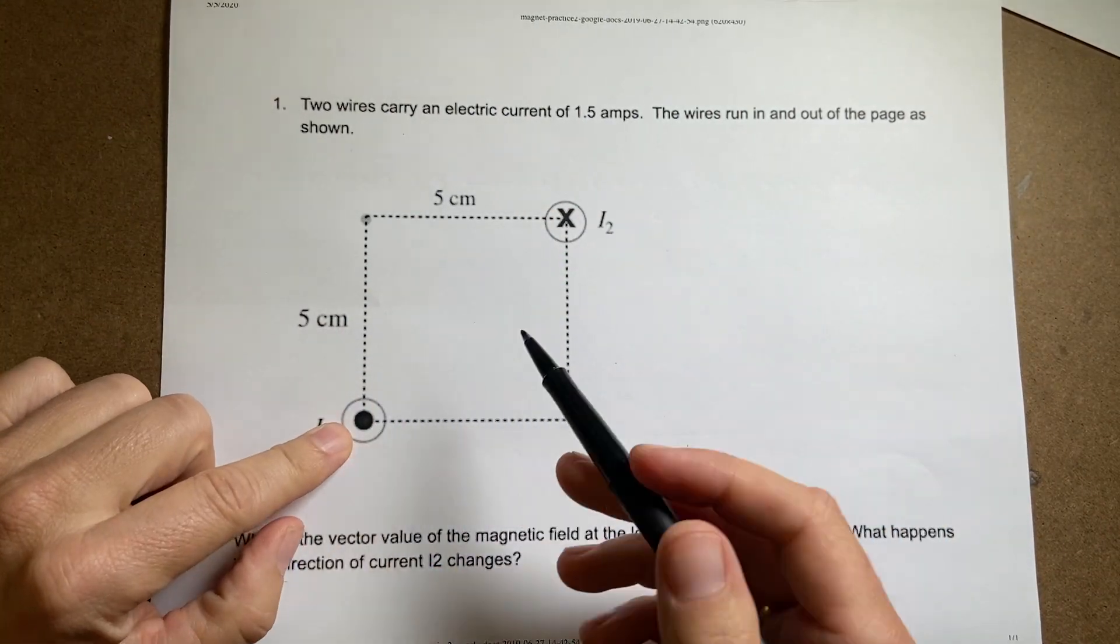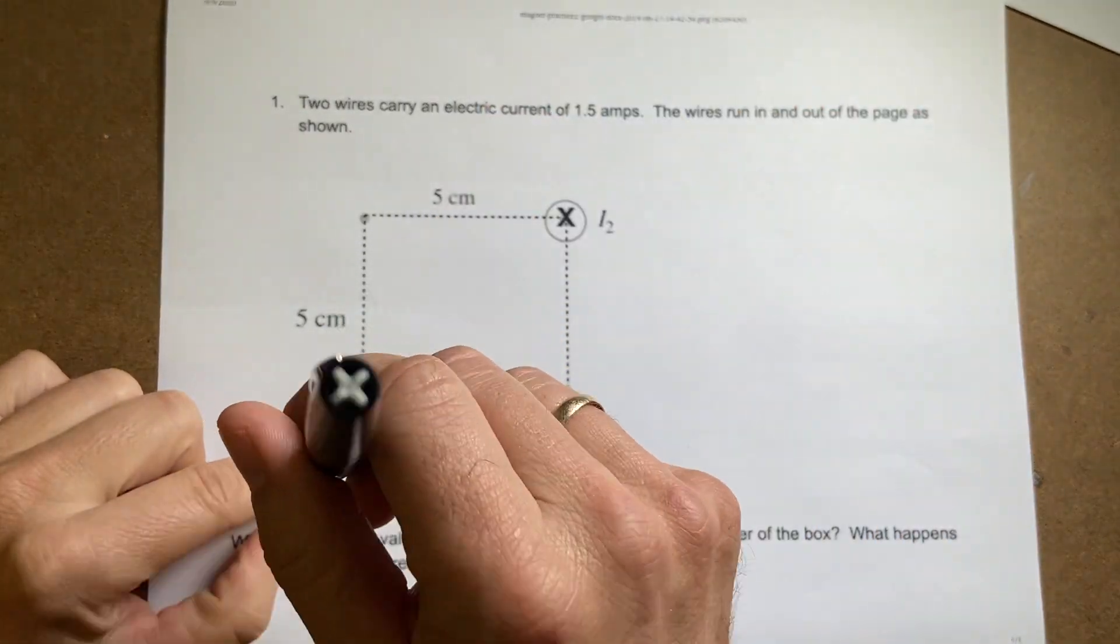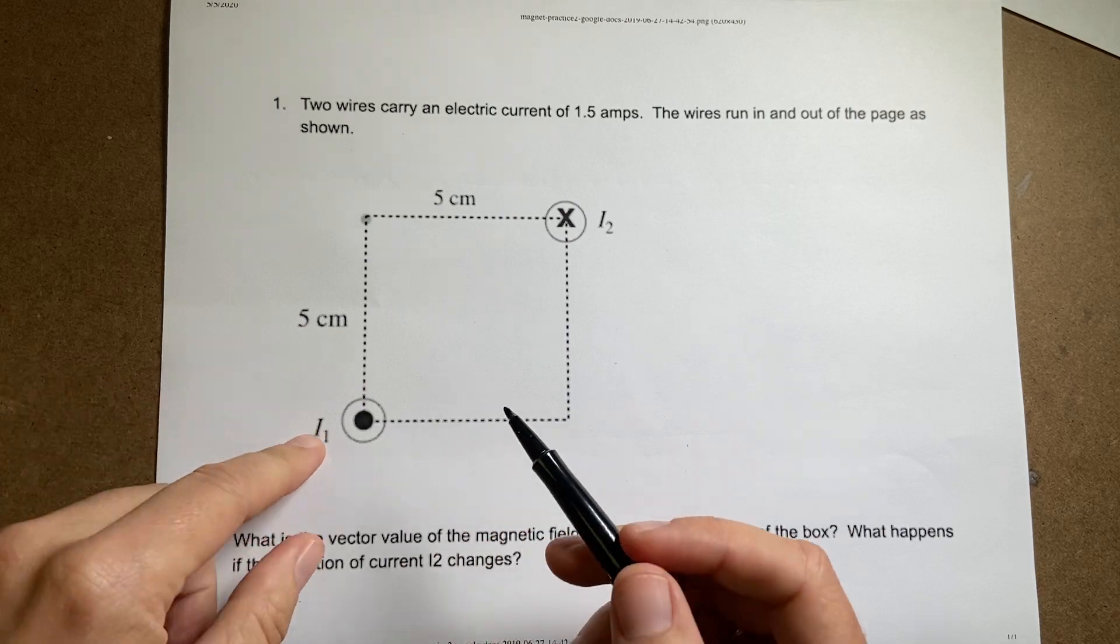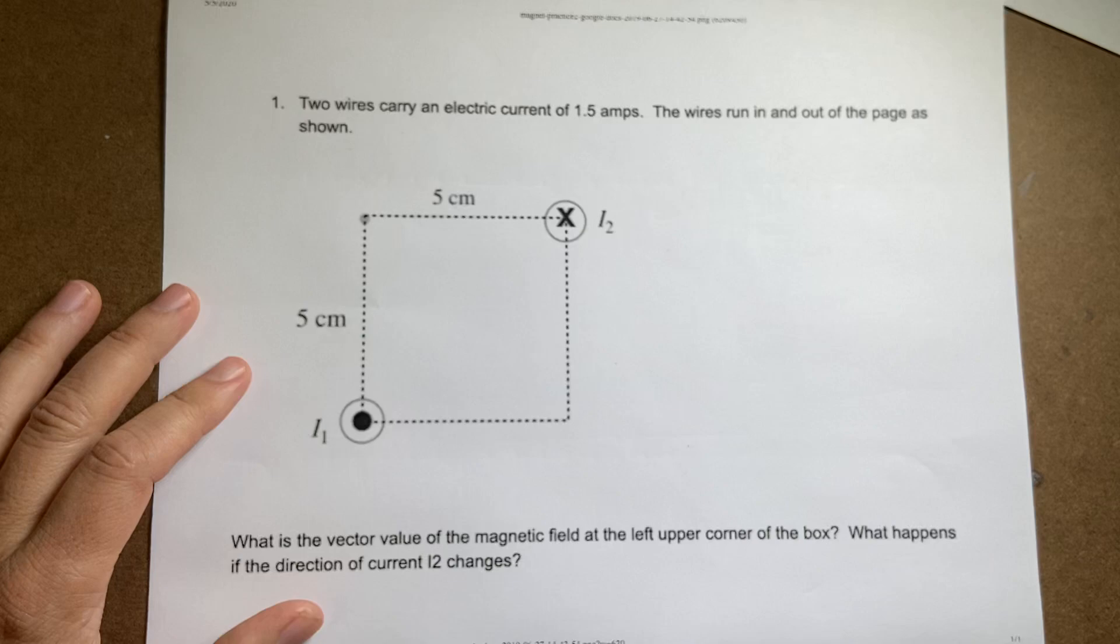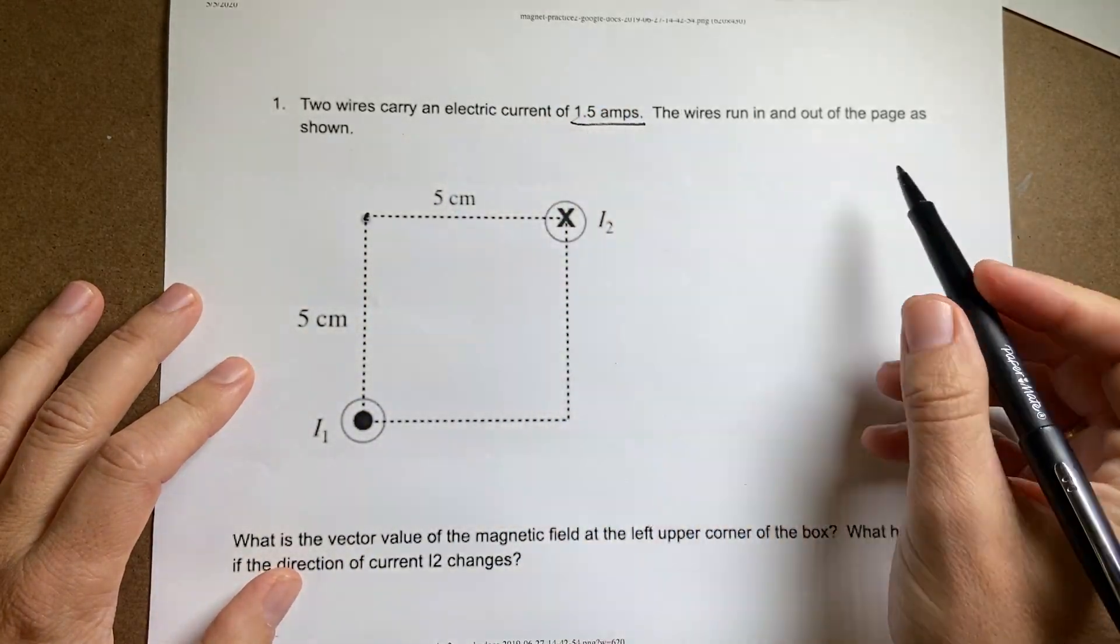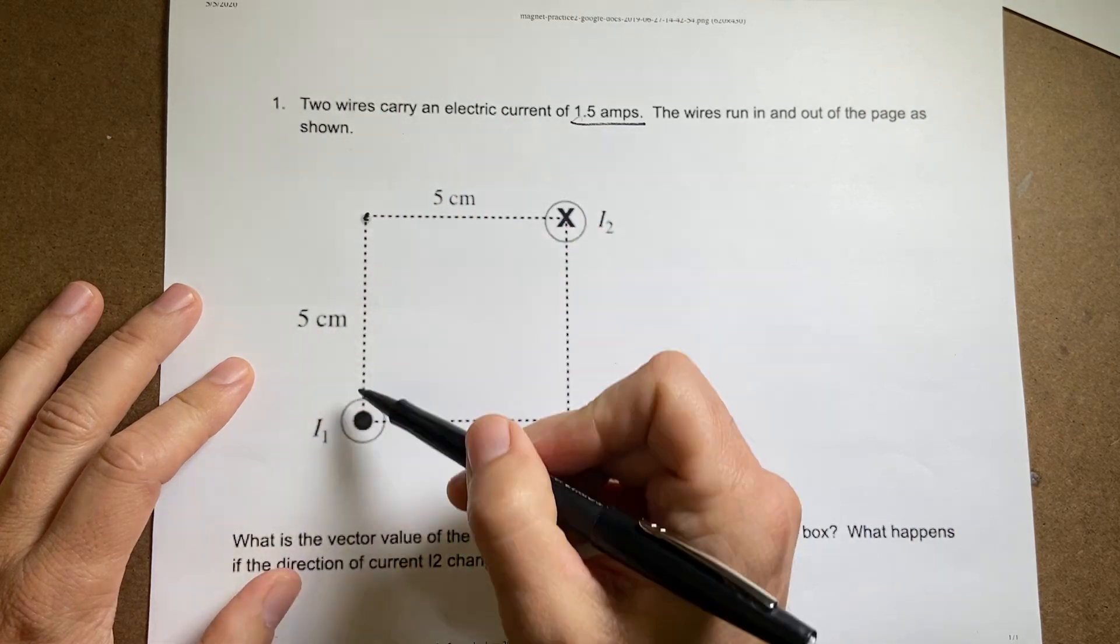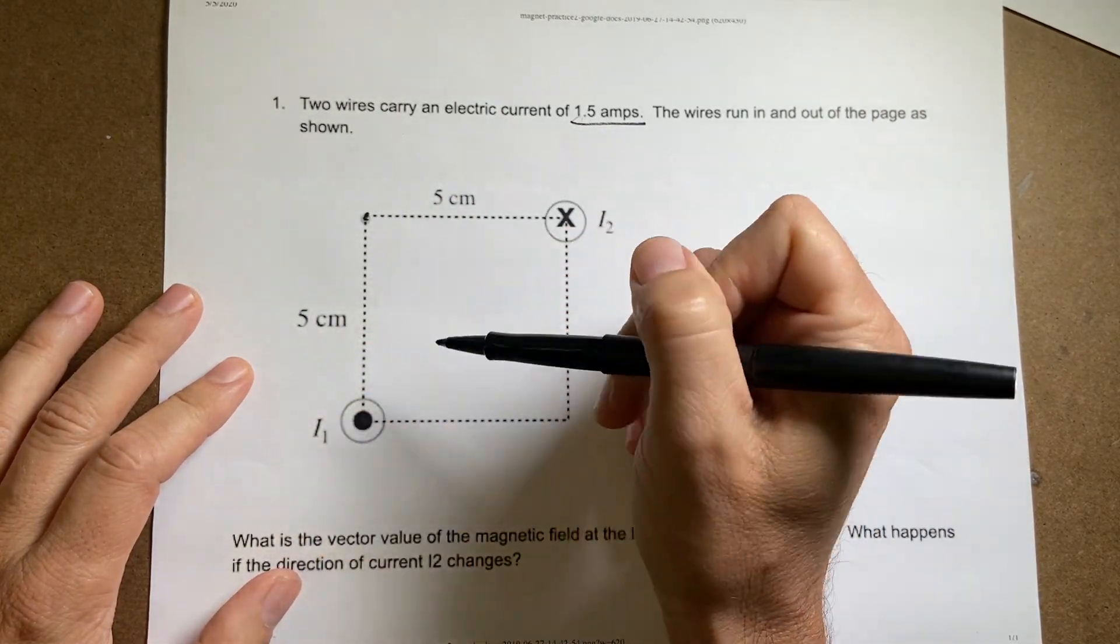So here I have two wires and I've drawn them so they're like coming in and out of the paper. This one has an electric current coming this way because it's a little dot. This one has a magnetic field going into the board. And the question is, if they both have a current of 1.5 amps and this is 5 centimeters, that's 5 centimeters. What's the value of the magnetic field right here?